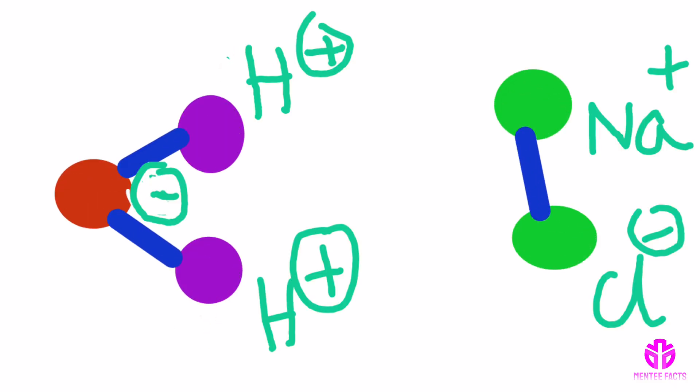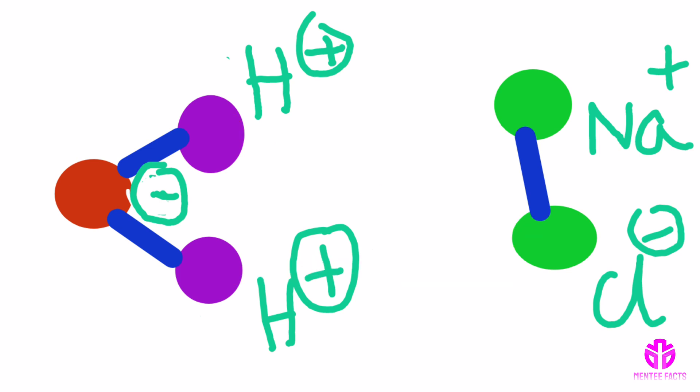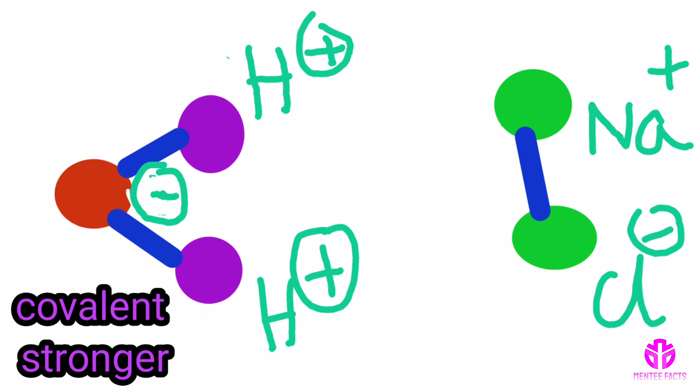The positively charged side of the water molecules are attracted to the negatively charged chloride ions, and negatively charged side of water molecules are attracted to the positively charged sodium ions. Covalent bonds of water are stronger than the ionic bond of NaCl.